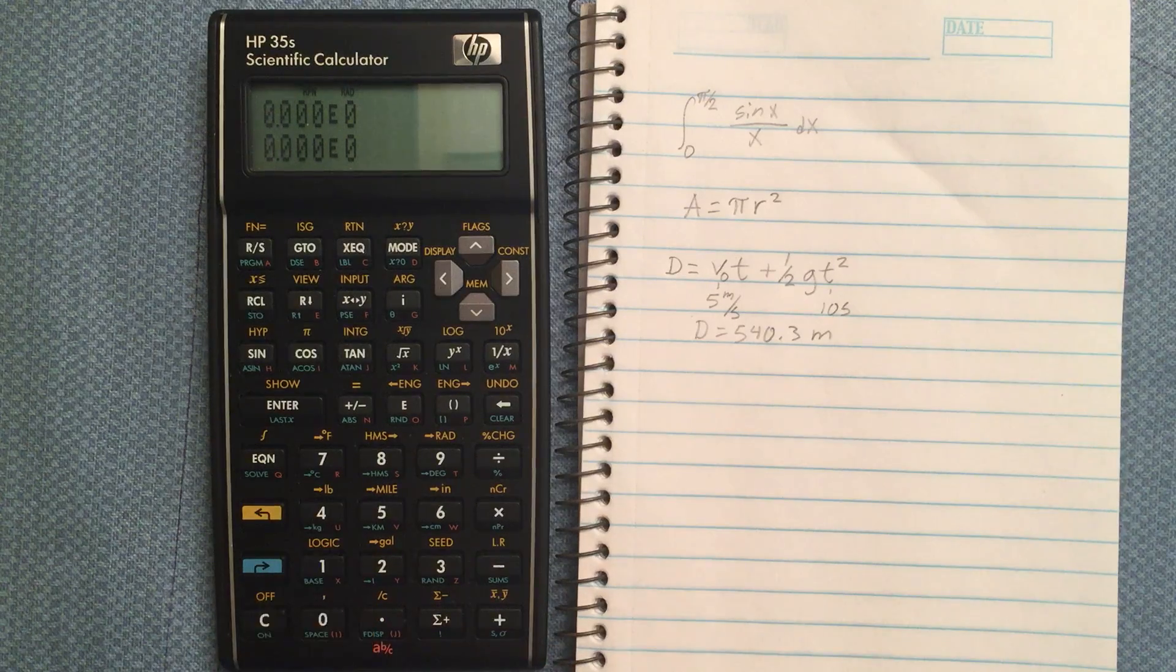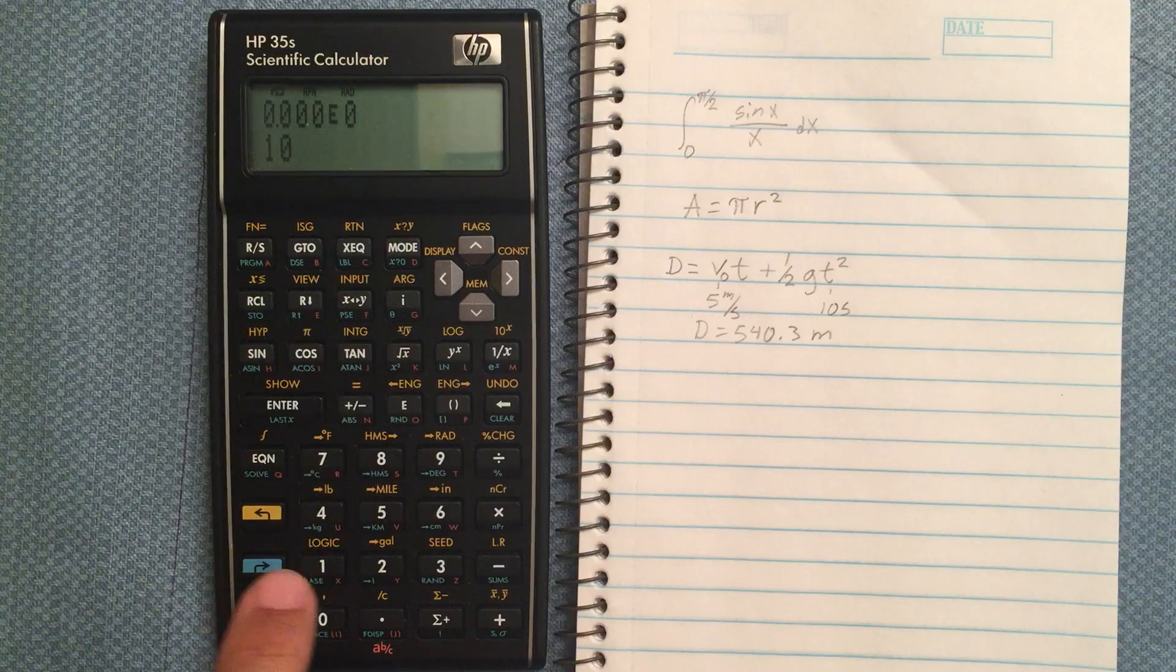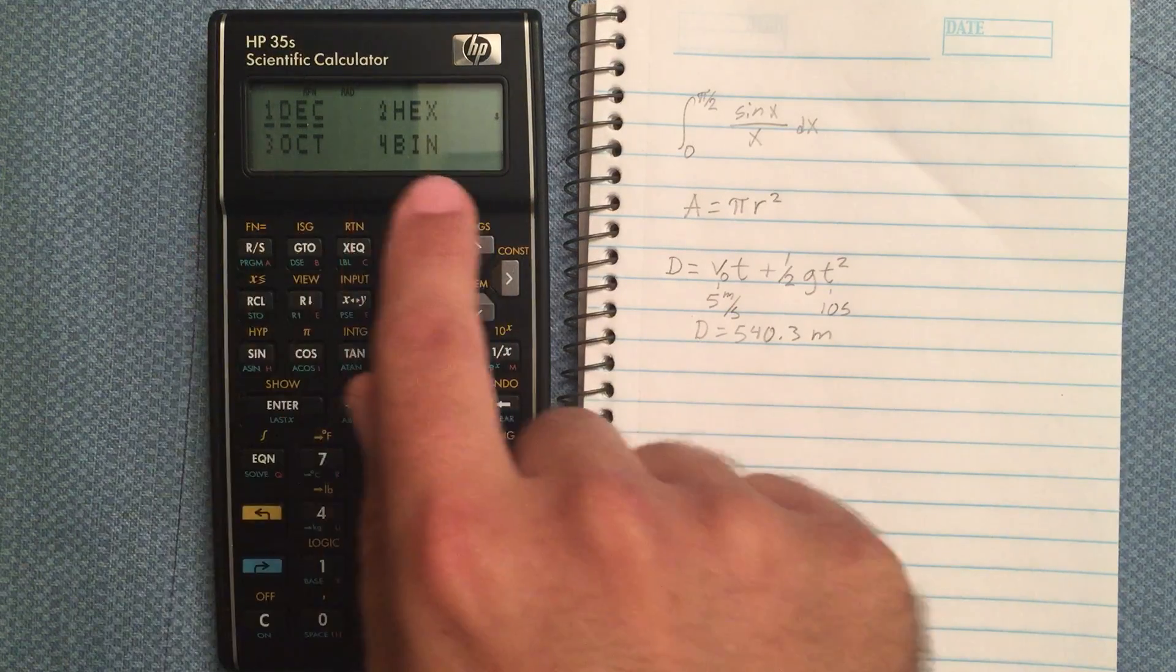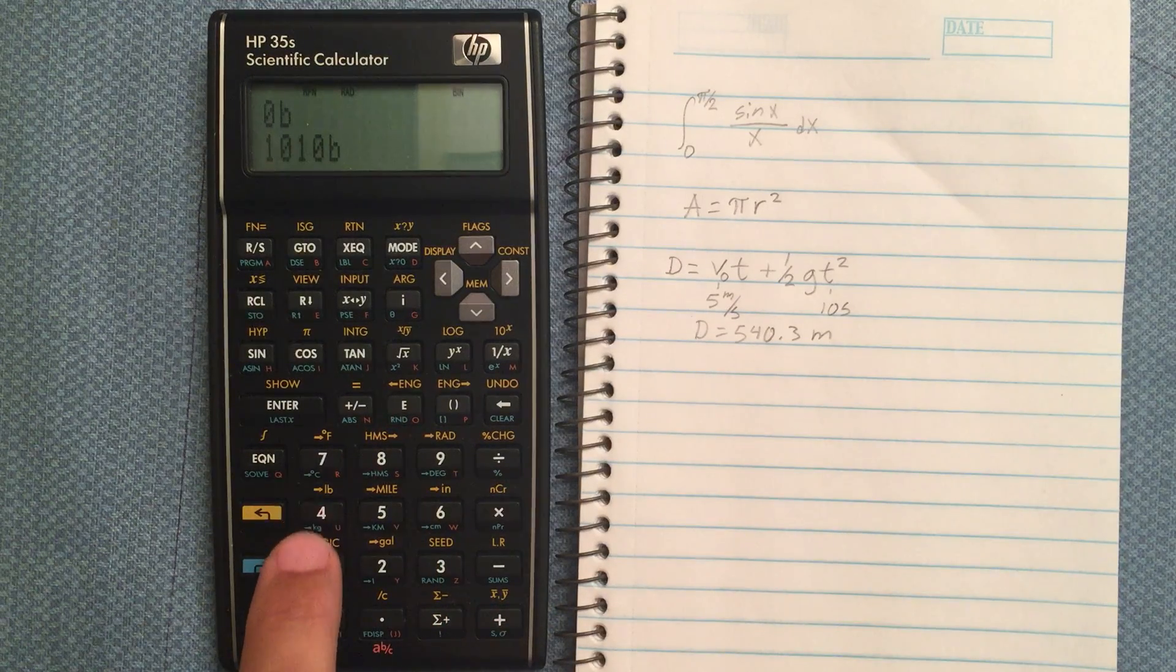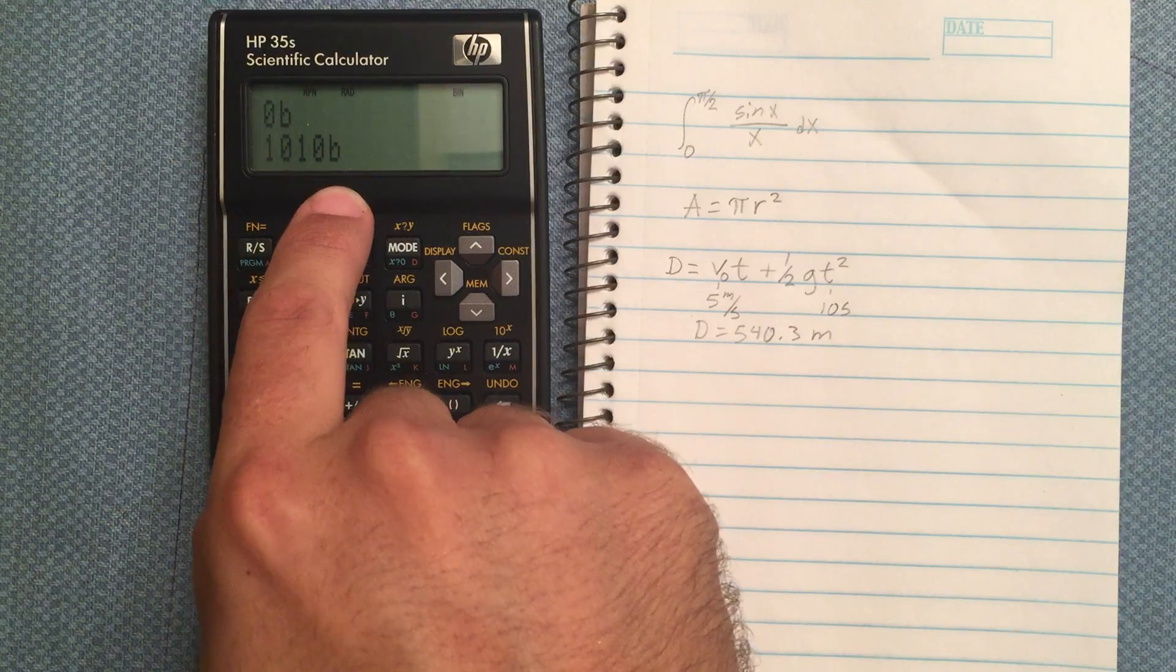So if I want to convert 10 to binary, I enter 10, I hit blue shift, and then the base key, and then pick which base I want it to go to. So let's say we want it to go to binary. So I select 4, and it tells me that it's 1010 in binary.